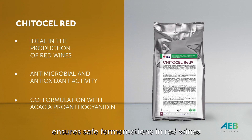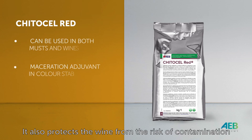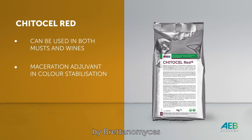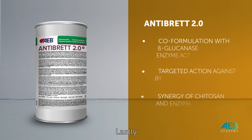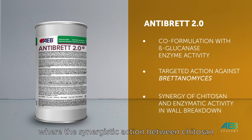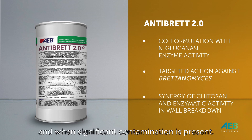Chitosan Red ensures safe fermentations in red wines with little or no sulfur dioxide content. It also protects the wine from the risk of contamination by Brettanomyces and promotes color stability. Lastly, Antibret 2.0 is an innovative formulation where the synergistic action between chitosan and beta-glucanase ensures unique effectiveness even when used in low dosages and when significant contamination is present.